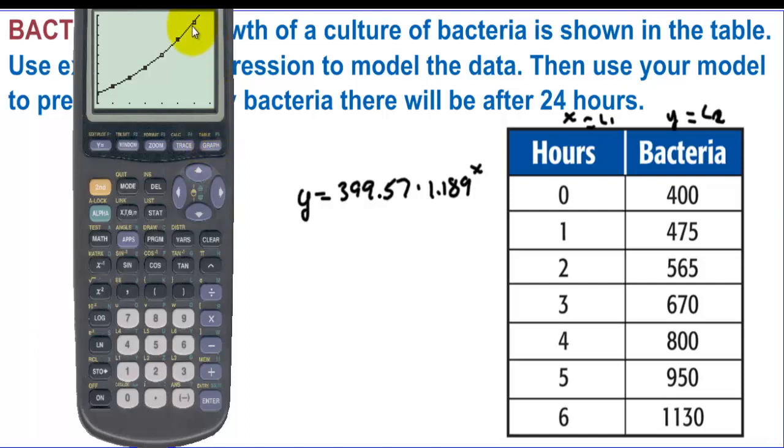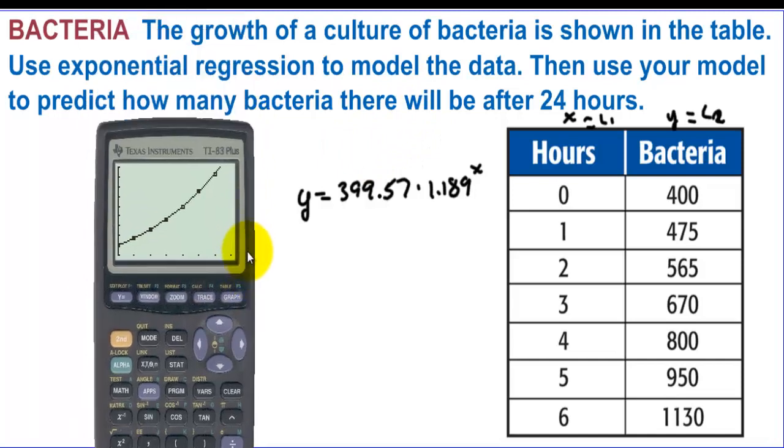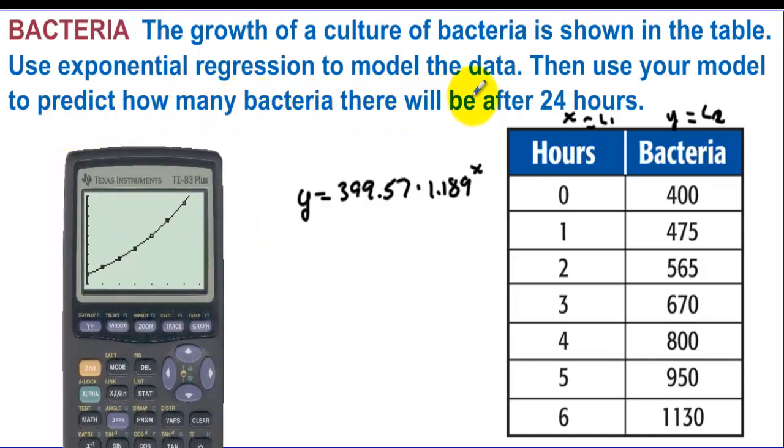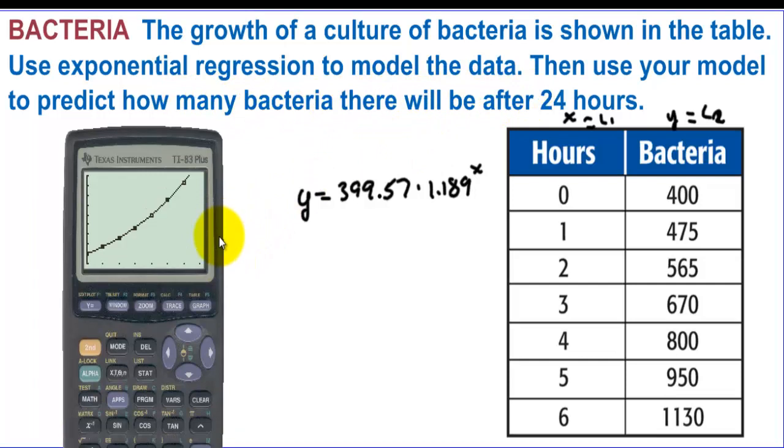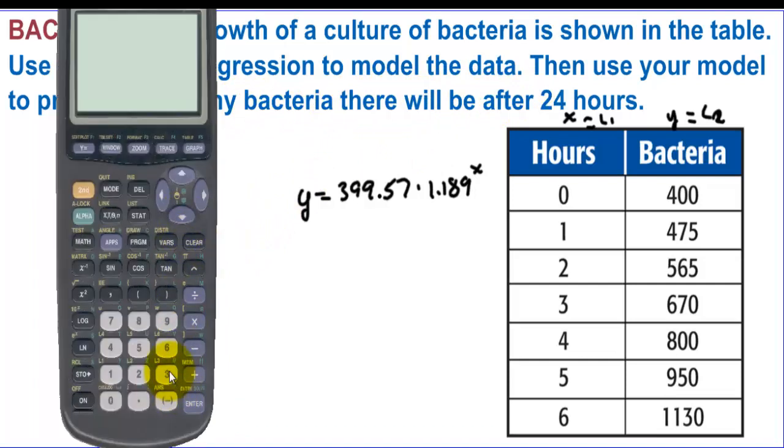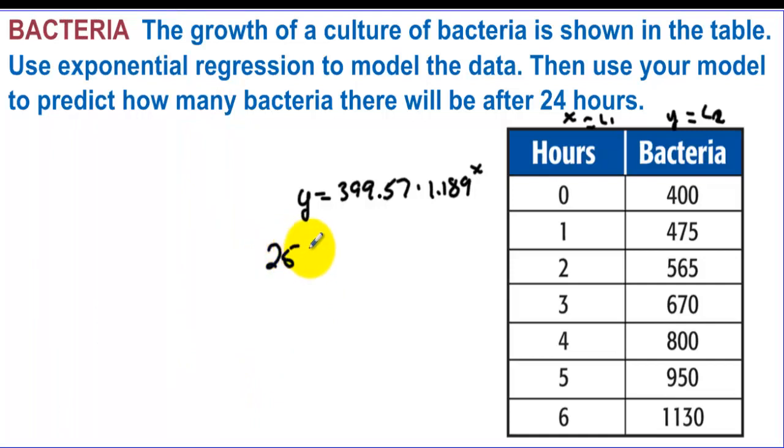So we graph and we see that the curve estimates those points rather well. It's kind of starting to miss right here a little bit more than it does down at the bottom. Now it says then use your model to predict how many bacteria there will be after 24 hours. We can go back to our home screen and type 399.57 times 1.189 raised to the 24th power. And we get 25,465 bacteria.